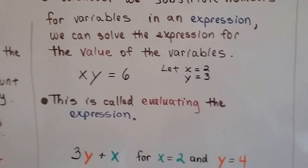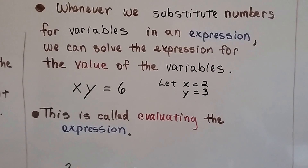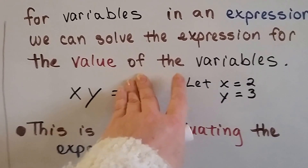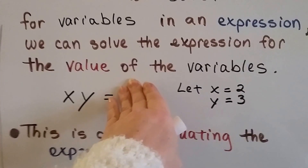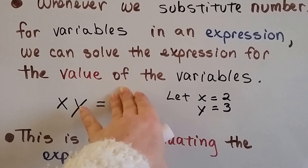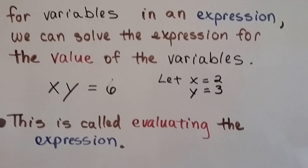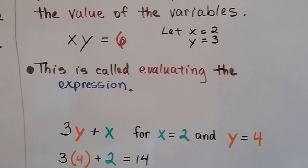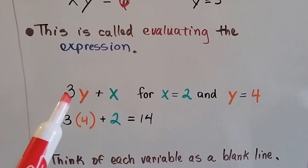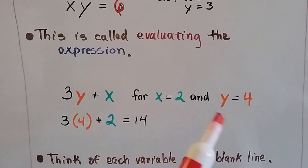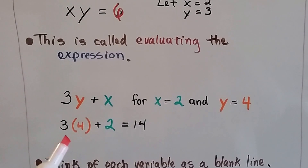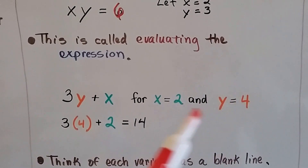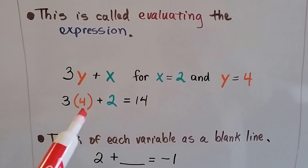Whenever we substitute numbers for variables in an expression, we can solve the expression for the value of the variables. So if we didn't know what x and y were, but it said let x equal 2 and y equal 3, we could substitute those amounts in and find that x times y is 6. This is called evaluating the expression. For example, 3y plus x, where x equals 2 and y equals 4: we get 3 times 4 plus 2, which equals 14. Now we've evaluated that expression.